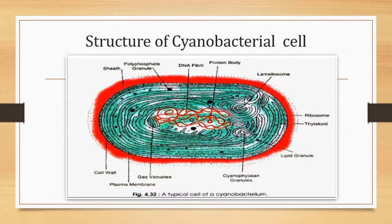Beneath the cell wall there is the plasma membrane. A typical cyanobacterial plasma membrane's thickness is 70 angstroms. It is selectively permeable and it lacks sterols such as cholesterol and other higher forms of sterols. The cytoplasm of cyanobacterial cells, like that of bacteria, does not contain many organelles like eukaryotes. For example, chloroplast is absent, and mitochondria, endoplasmic reticulum and Golgi bodies are also absent.